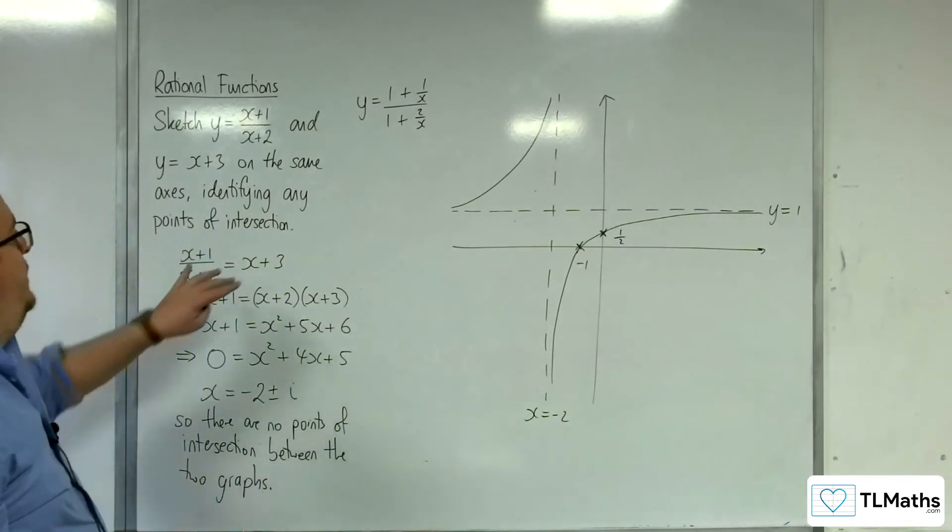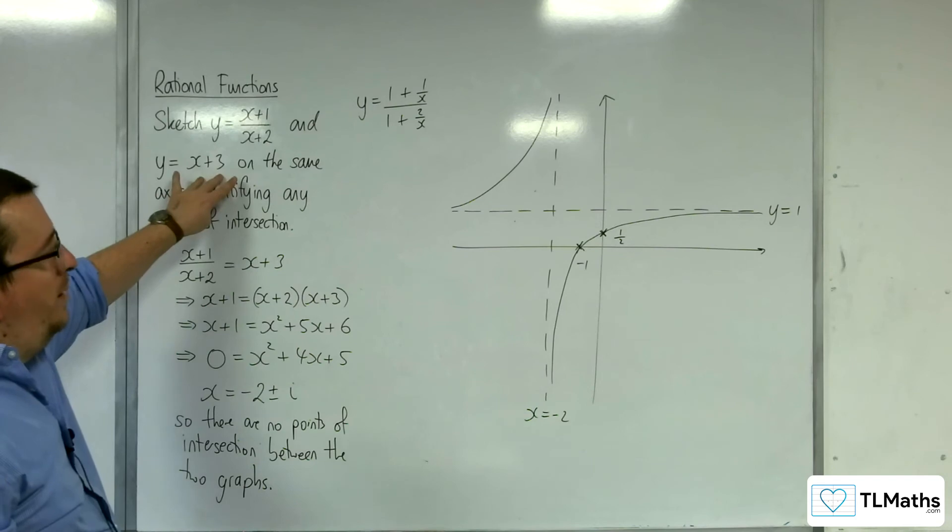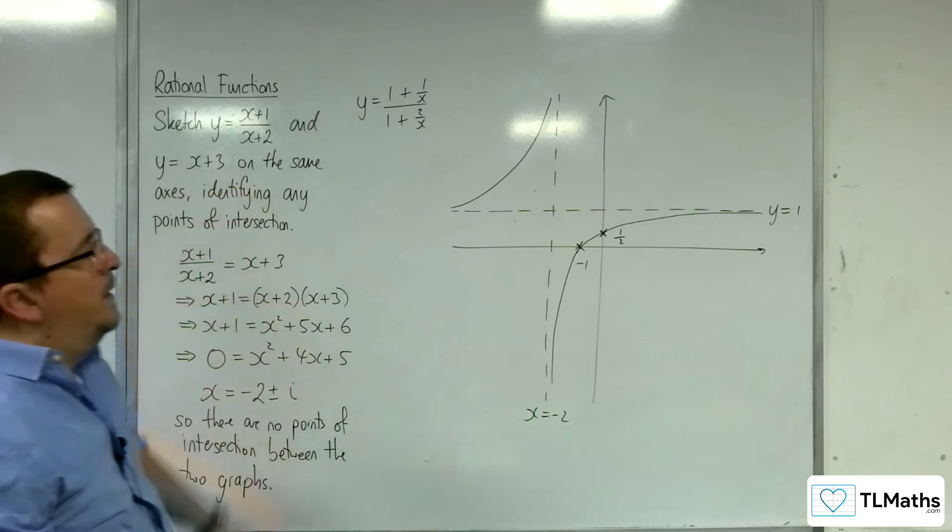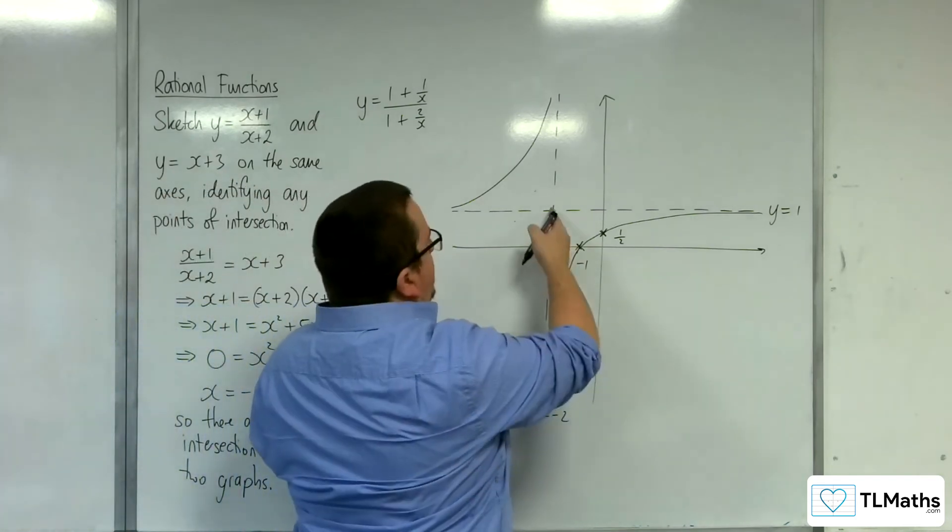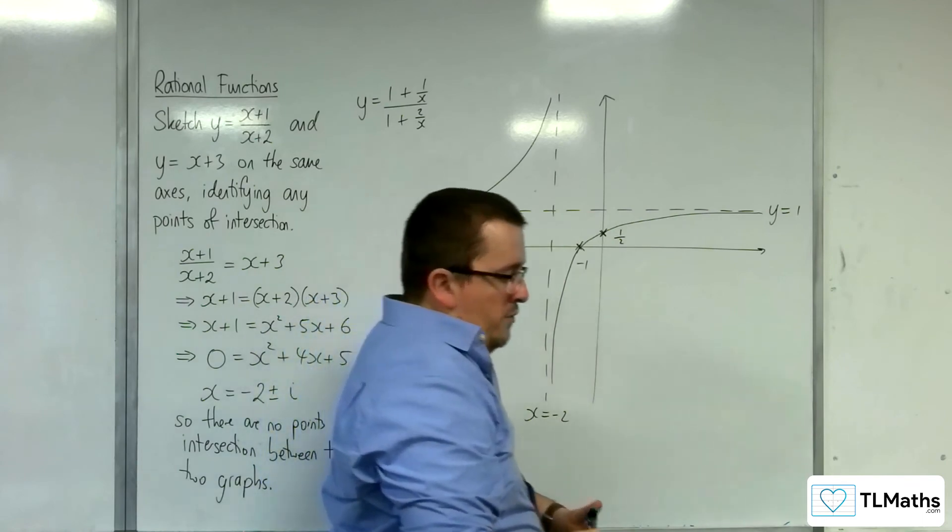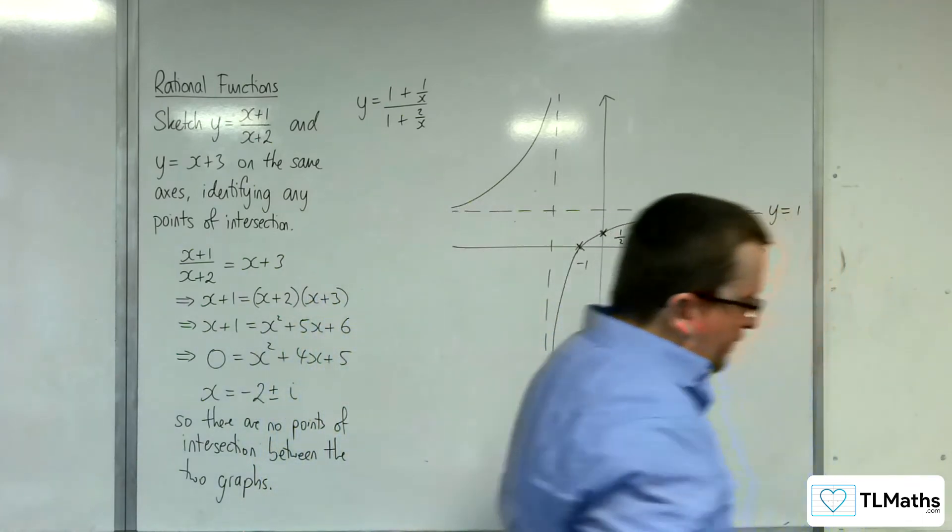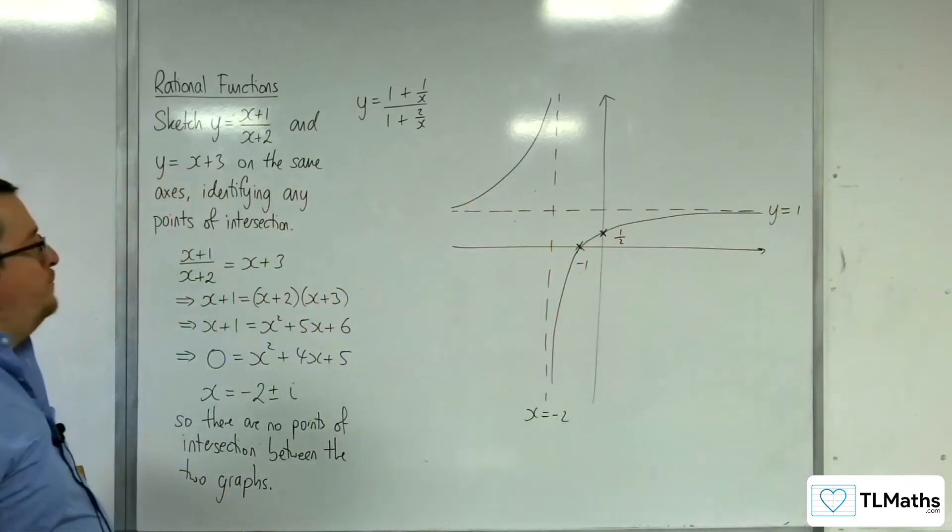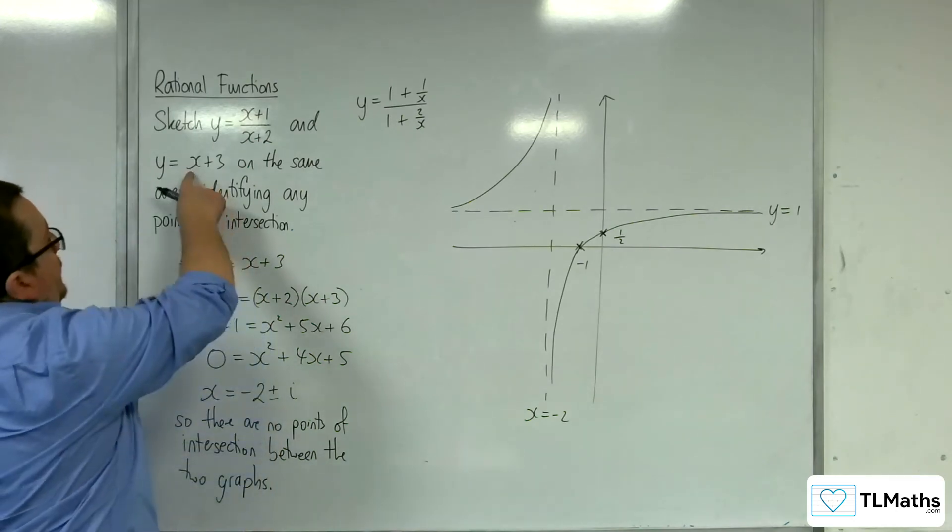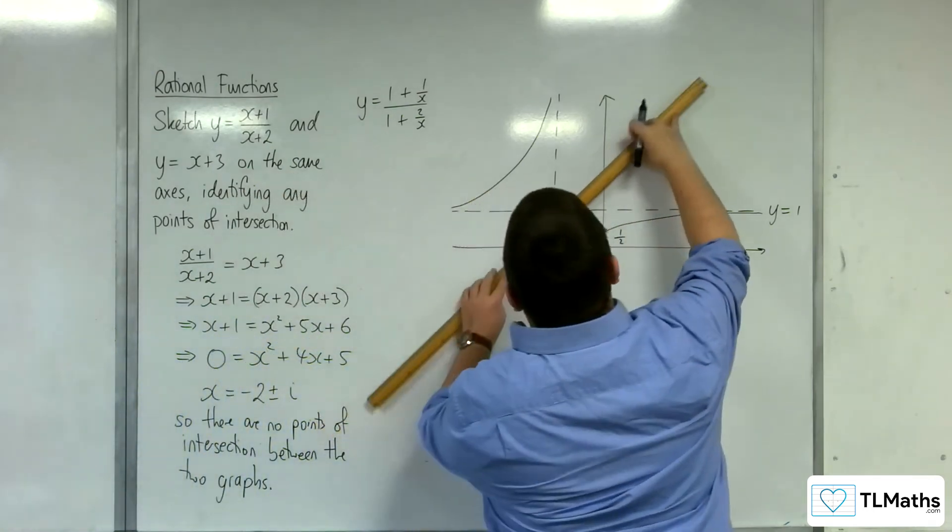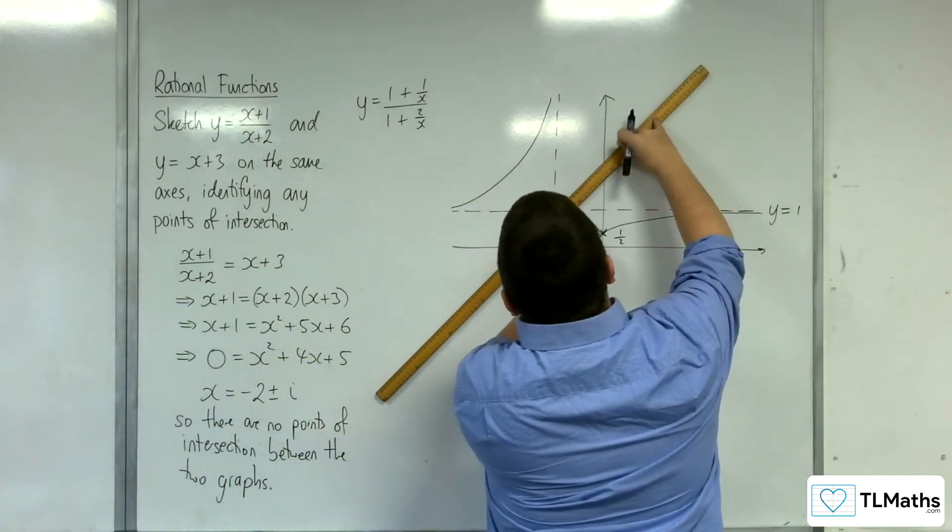So then we need to draw the other line, y equals x plus 3. OK, so minus 2, 1 is actually going to be going through that point, isn't it? Because minus 2 plus 3 is 1. So it's actually going through that point of intersection of the two asymptotes.